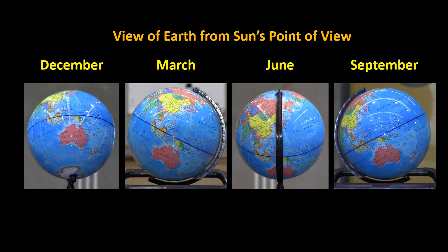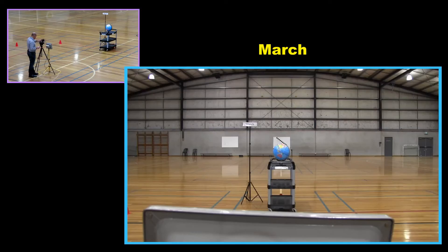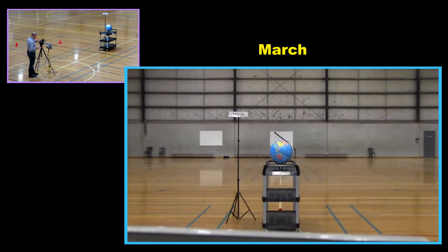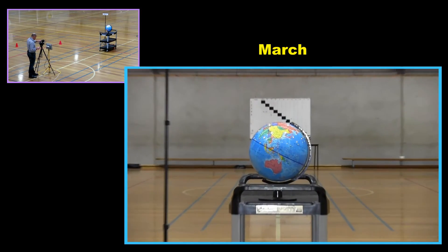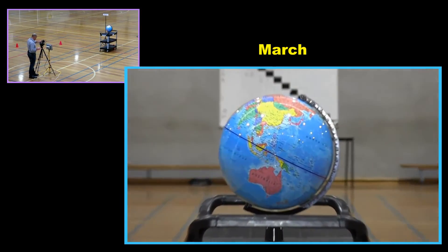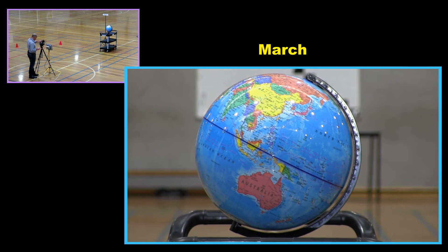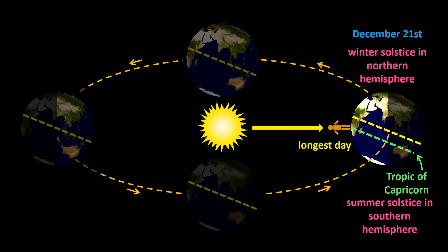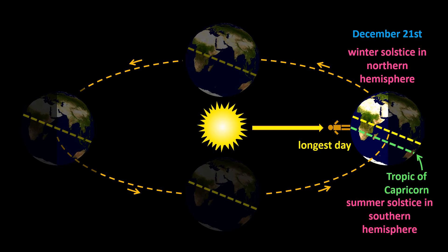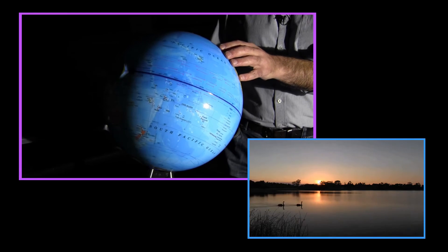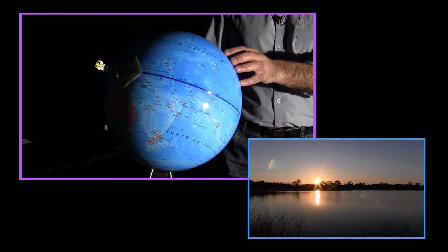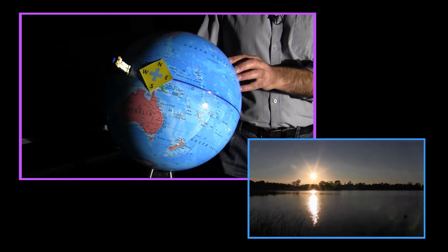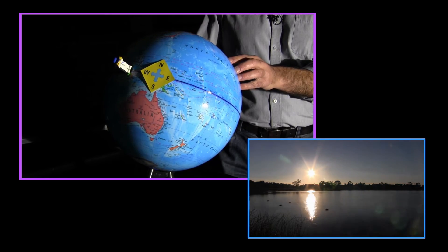Thanks for watching this short excerpt from Shedding Light on the Sun and Earth, Episode 1: Seasons. The Shedding Light on the Sun and Earth series introduces students to the basics of climate science. We examine what causes seasons, why the days are longer in summer than they are in winter, how the movement of the Sun across the sky affects the renewable energy industry, and a whole lot more.